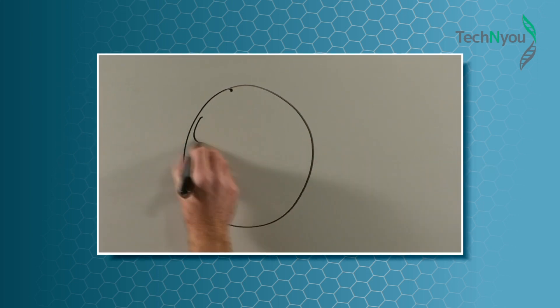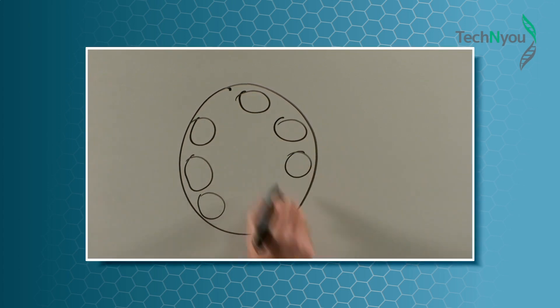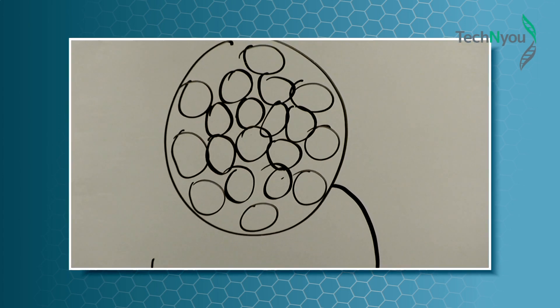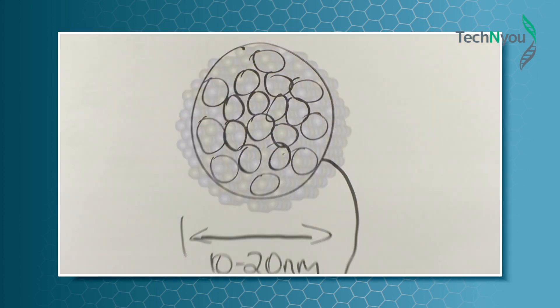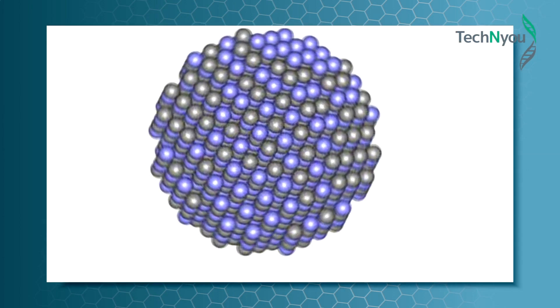A nanoparticle has a diameter of 10 to 100 nanometers and is made up of a cluster of atoms.